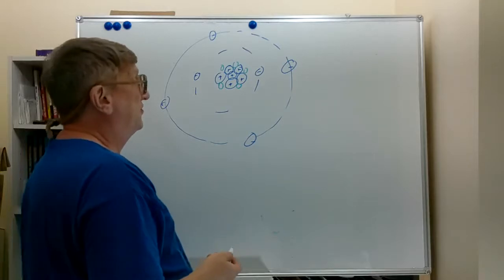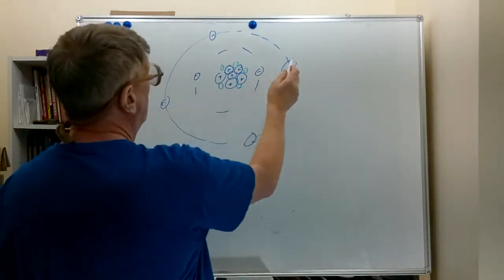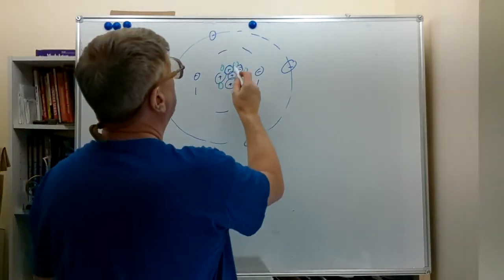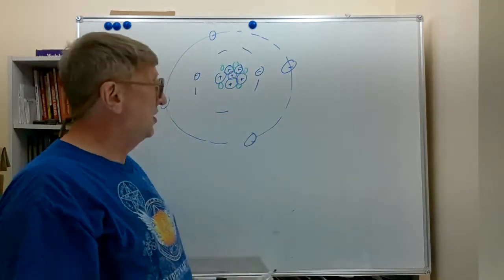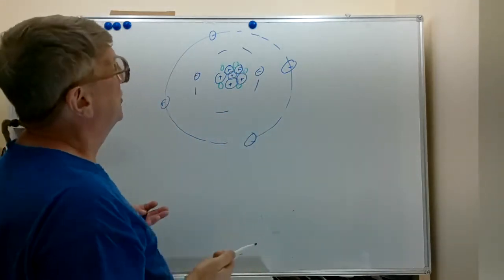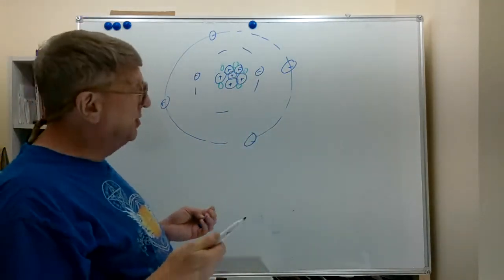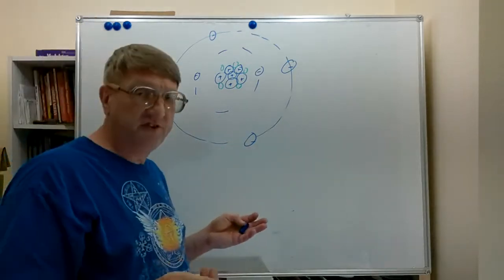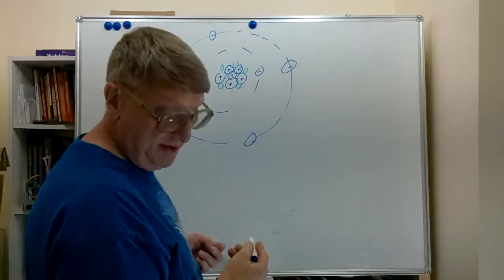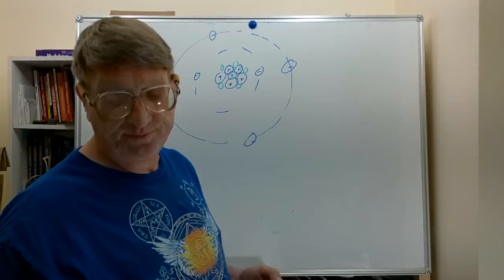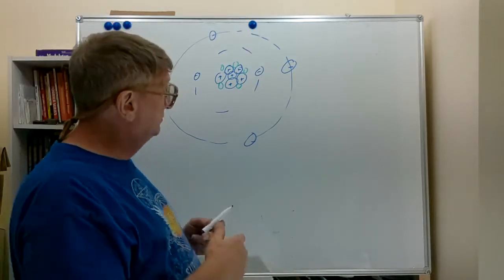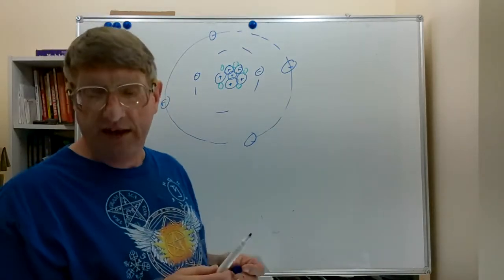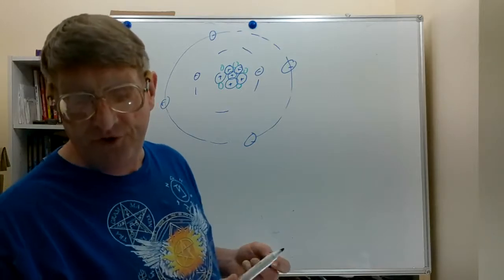So we have six electrons and six protons. This carbon atom is in balance — it is not charged. It has an equal number of protons and electrons. Let's mention mass quickly: most of the mass is in what is called the nucleus of the atom. A proton is approximately 1,840 times as massive as an electron. So you can see that removing a single electron doesn't change the total mass of the carbon atom very much.